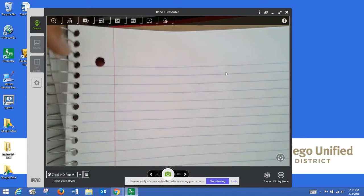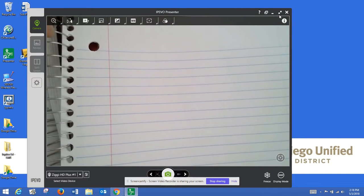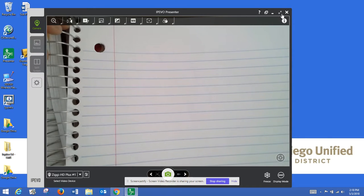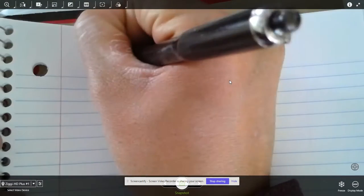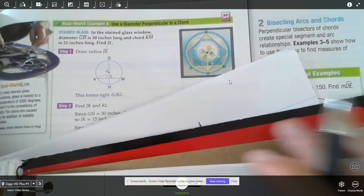Hey class, it's just me, Mr. Wee. I'm going to go through, let's see if this works out. Alright, so I'm going to go through 11-3.